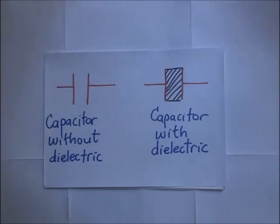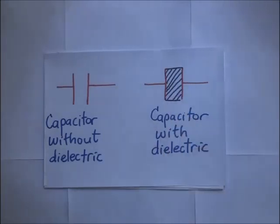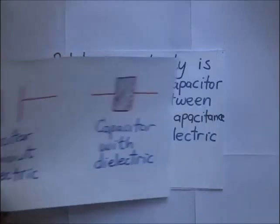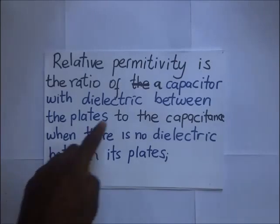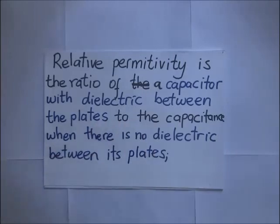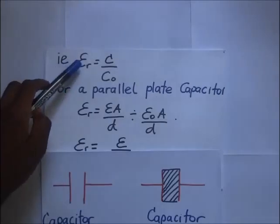When we find the ratio of those two capacitances, we get a term called relative permittivity. Relative permittivity is simply the ratio of the capacitance of the capacitor when there is a dielectric between the plates to the capacitance of the capacitor when there is no dielectric between its plates.